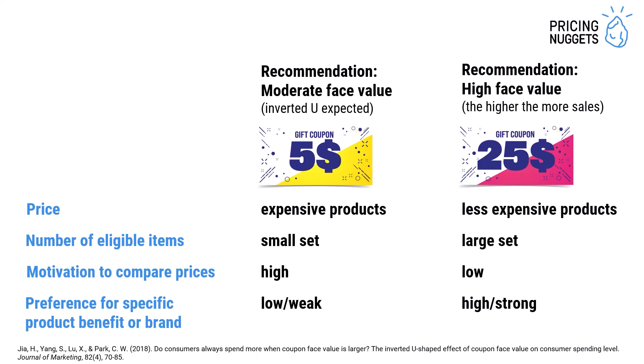The third factor is the motivation to compare prices. If this is high, customers might calculate the savings difference between two options and express an inverted U relationship between coupon face value and amount spent per transaction. If the motivation of customers is very low to compare prices, we will see a positive relationship, so higher coupon values increase the amount spent.